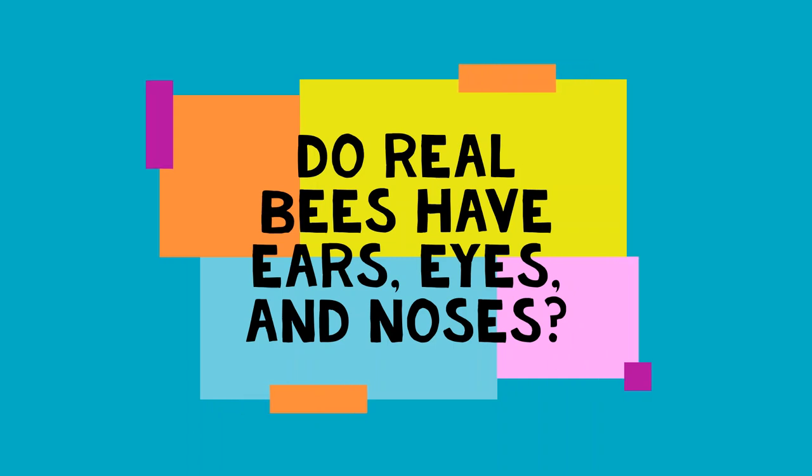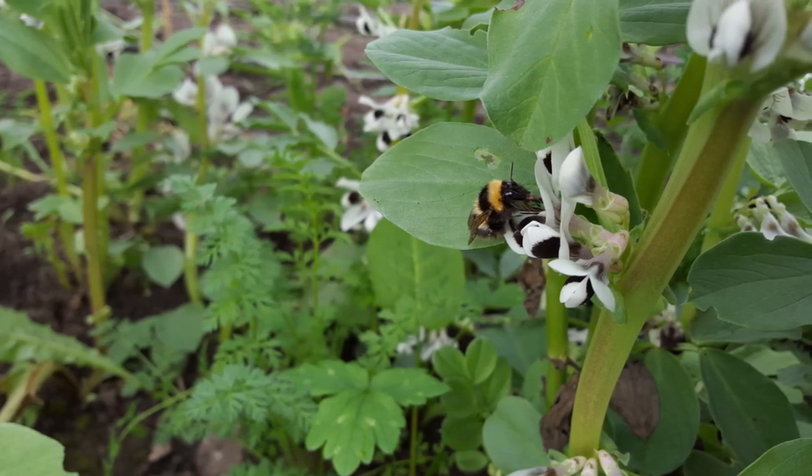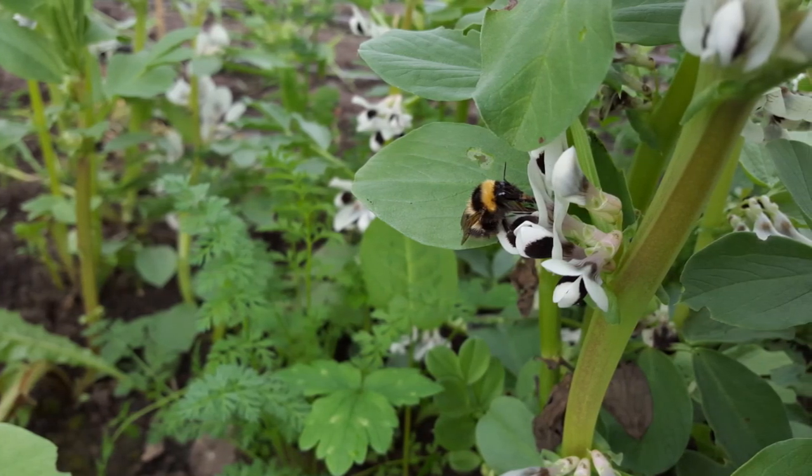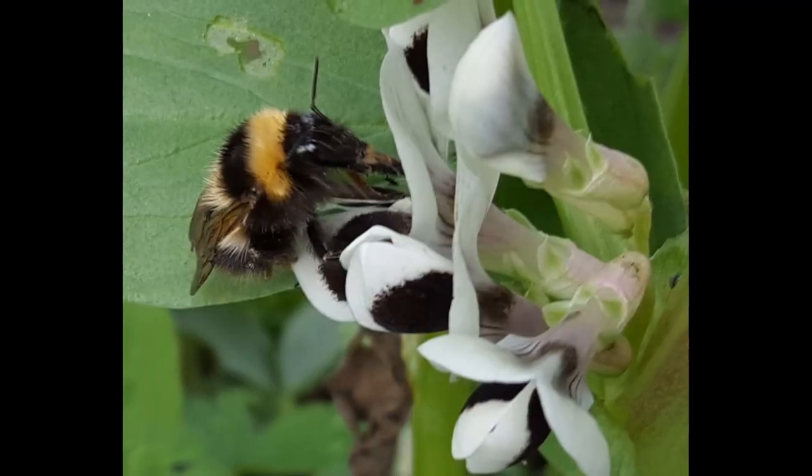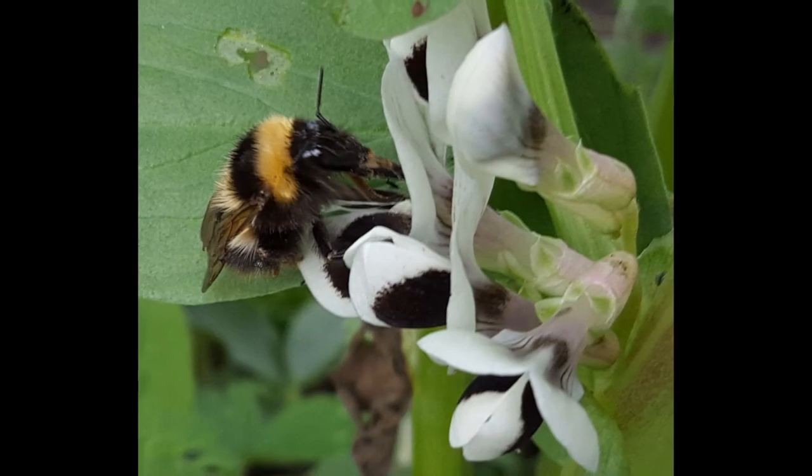The way bees can sense what is around them is very different to us. On their heads, they have eyes that see and long antenna, which allow them to smell and feel what's around them. They don't have a nose, or ears like ours, but the antenna more than make up for that.